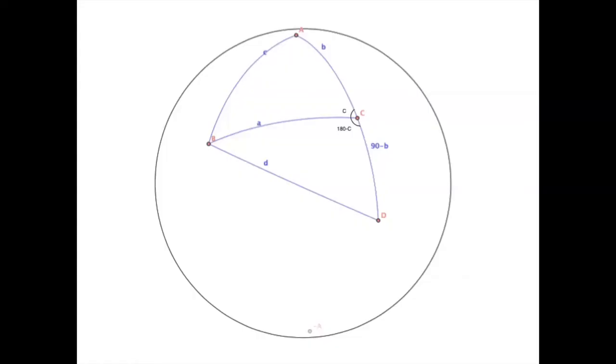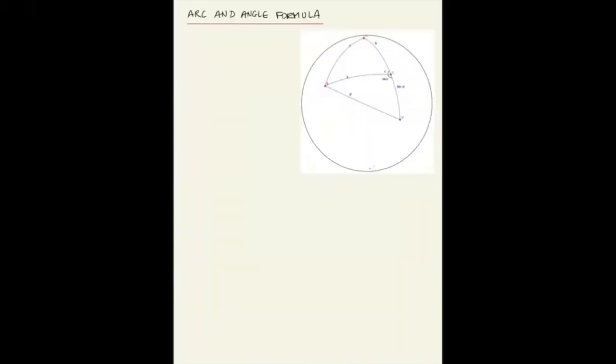Consider this triangle A, B, and C. Now prolong along the arc AC to a point D so that AD has 90 degrees.